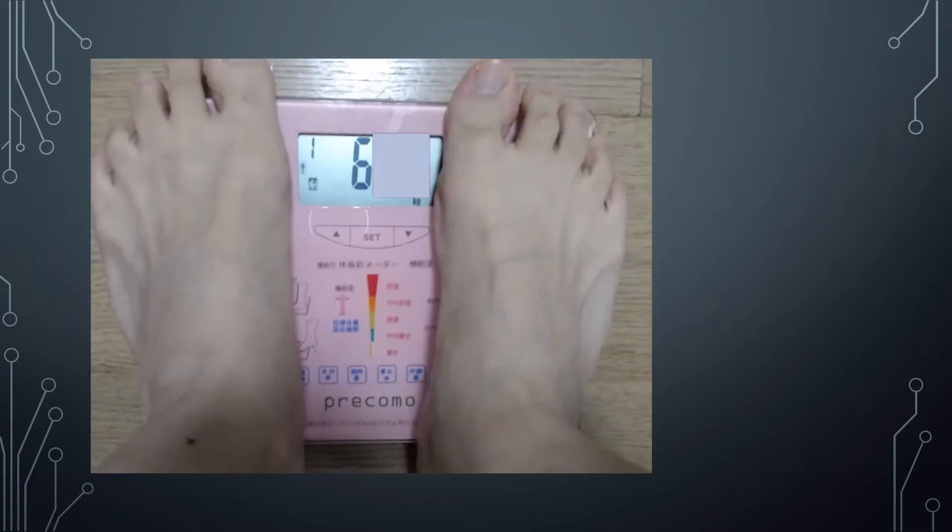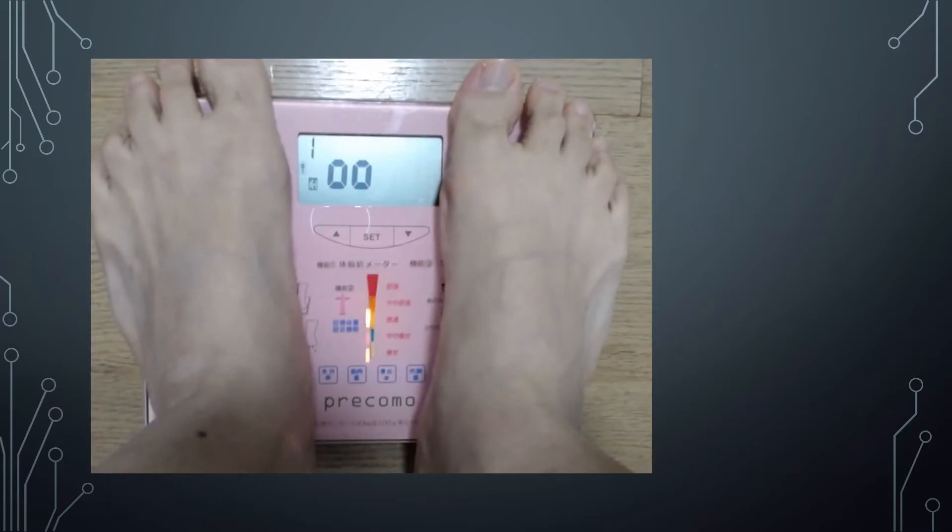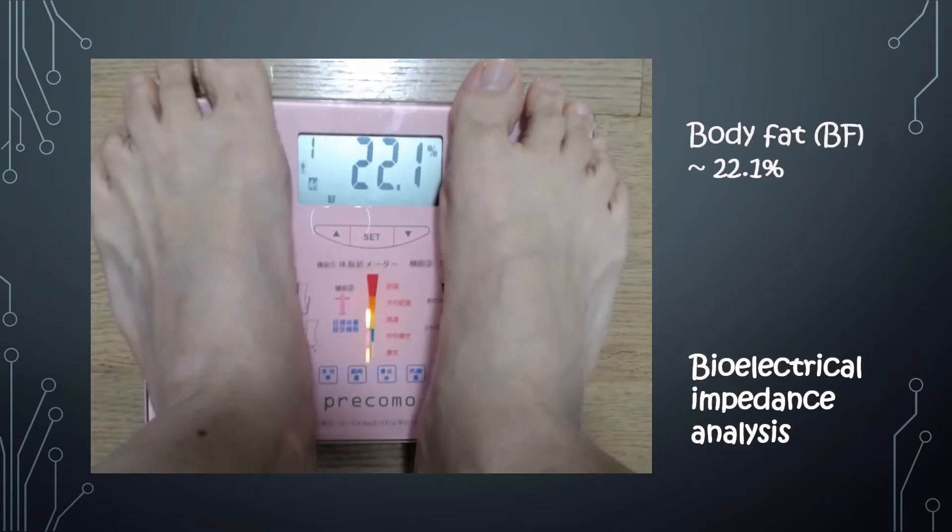Nowadays, some bathroom scales do more than just measure your weight. They can also measure your body fat percentage and body water percentage. This is known as bioelectric impedance analysis. So how do they do that?